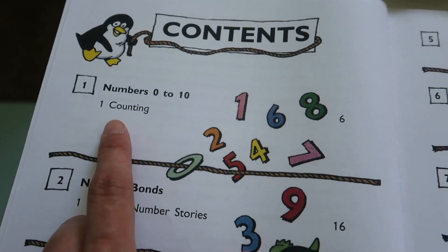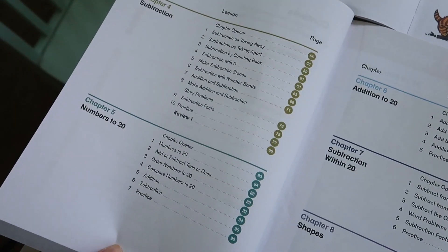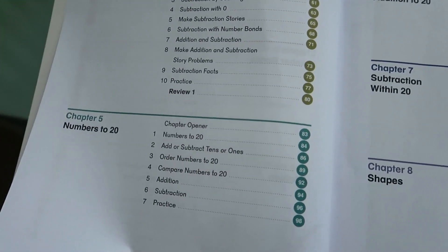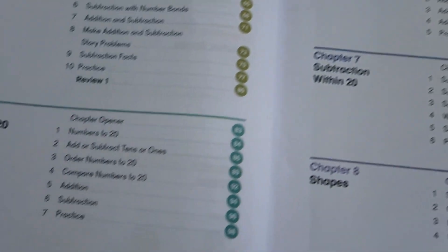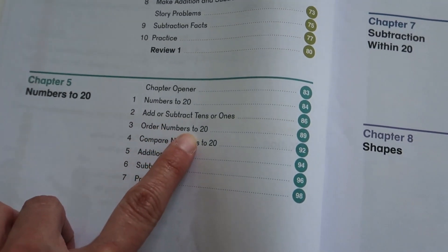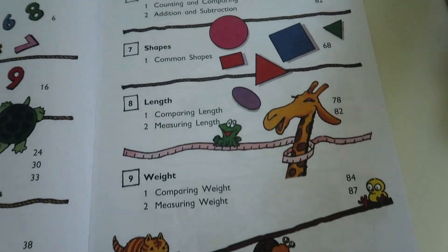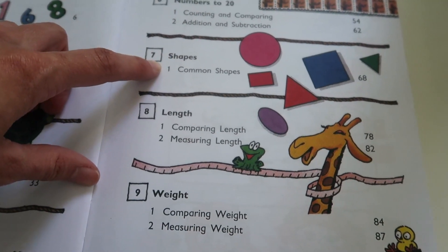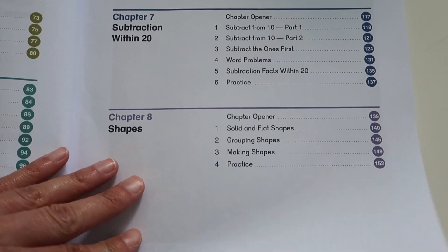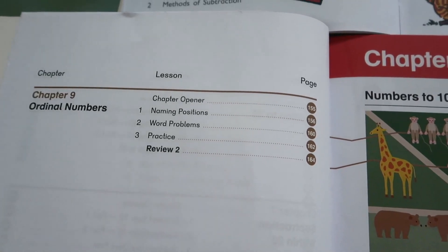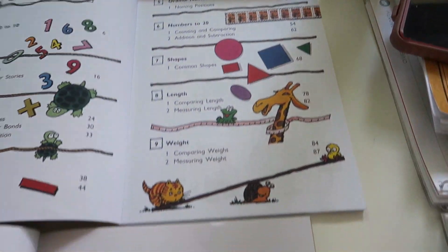Chapter 1 is numbers 0 to 10, which is the same for both. Chapter 2 is number bonds followed by addition and subtraction — also the same. However, in dimensions math chapter 5 has an added section on ordinal numbers. In primary mathematics you have numbers to 20, then shapes, length, and weight. In dimensions math after numbers to 20 you have subtraction within 20, then shapes, then ordinal numbers — so length and weight may be covered in the second book. It looks like you're covering more content in book 1A in primary mathematics.